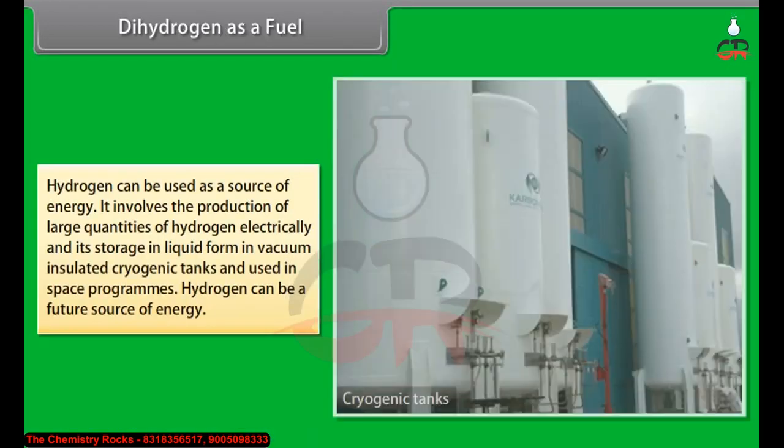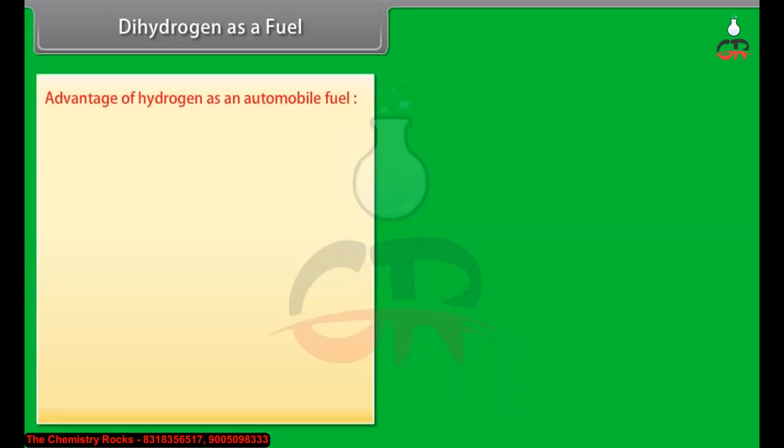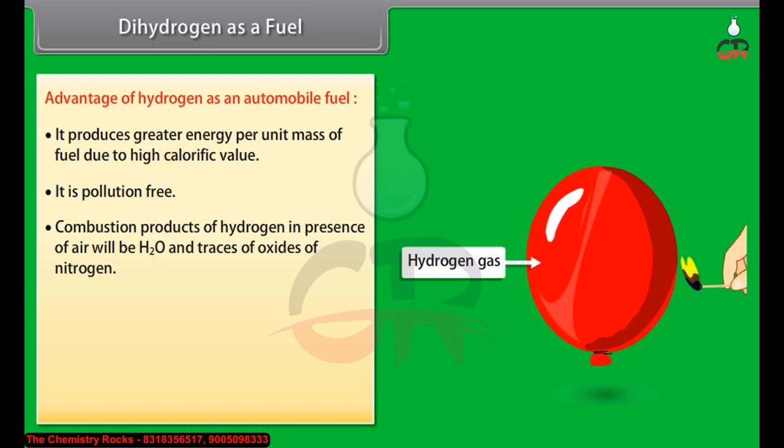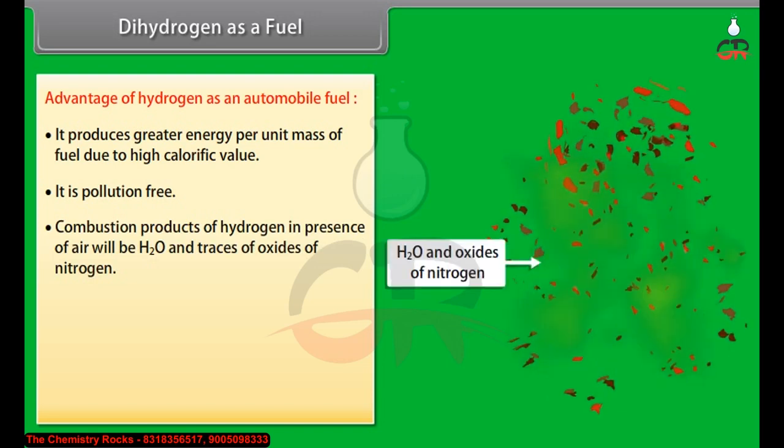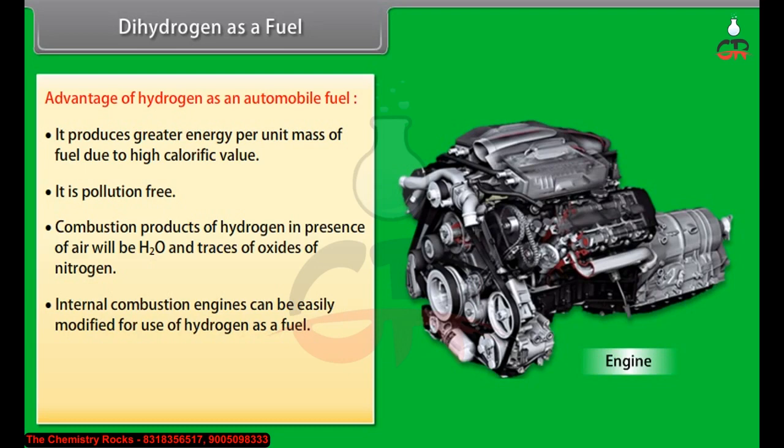Dihydrogen as a fuel: hydrogen can be used as a source of energy. It involves the production of large quantities of hydrogen electrically and its storage in liquid form in vacuum-insulated cryogenic tanks and used in space programs. Hydrogen can be a future source of energy. Advantages of hydrogen as an automobile fuel: it produces greater energy per unit mass of fuel due to high calorific value. It is pollution-free - combustion products of hydrogen in presence of air will be H2O and traces of oxides of nitrogen. Internal combustion engines can be easily modified for use of hydrogen as a fuel.